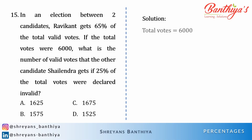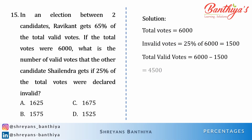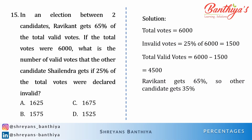Let's see the solution. Total votes = 6,000. Invalid votes = 25% of 6,000 = 1,500. So total valid votes = 4,500. Ravikant gets 65%, so the other candidate gets 35% only. Hence 35% of 4,500 = 1,575. That's your final answer.